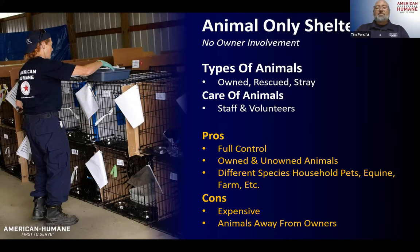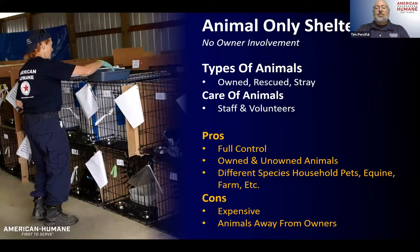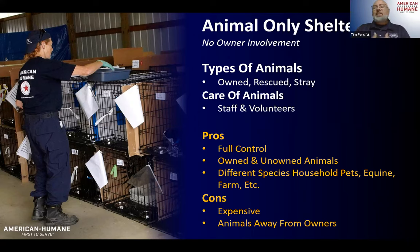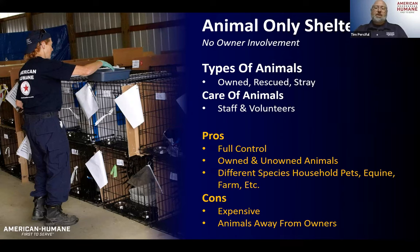Some of the downsides: it's expensive. You provide everything — food, which might be donated but you're still providing it, supplies, and you may have to feed your staff and volunteers too. One of the biggest downsides is that animals are away from their owners, which can be a challenge. Sometimes animal-only shelters are in a typical brick-and-mortar shelter if you can evacuate animals pre-disaster.